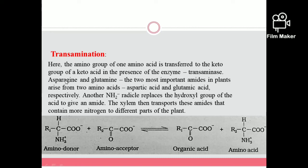There are two important amides in plants: asparagine and glutamine, which arise from two amino acids — aspartic acid and glutamic acid respectively. By the addition of an amino group (NH2 radical), the hydroxyl group of the carboxyl (COOH) group is replaced to give an amide group (CONH2). These amides contain nitrogen and are transported to different parts of the plant.